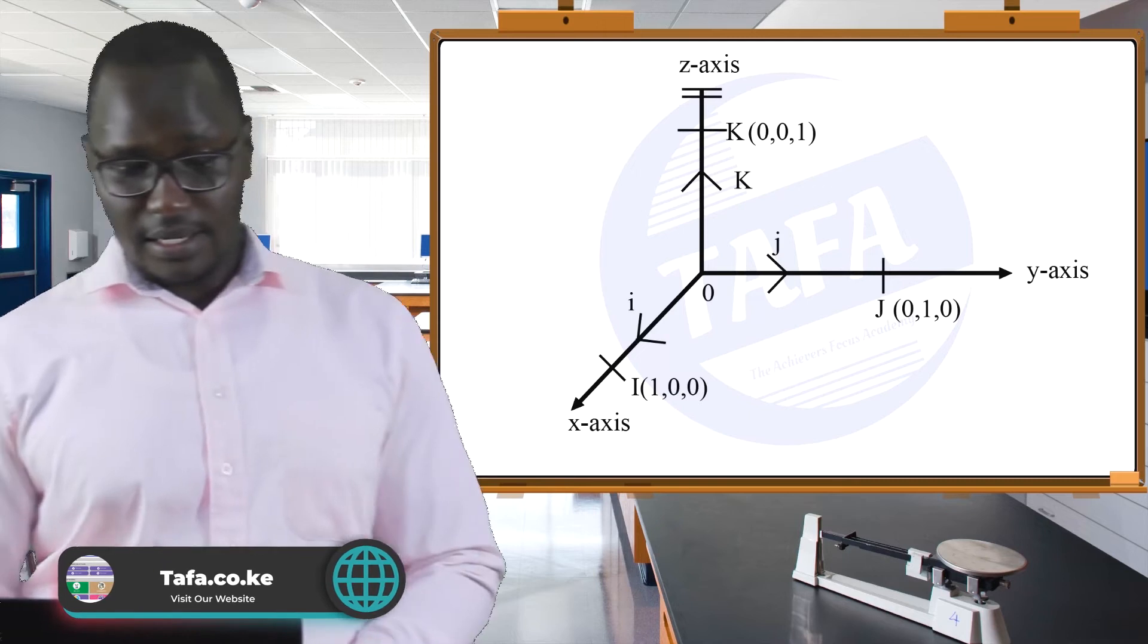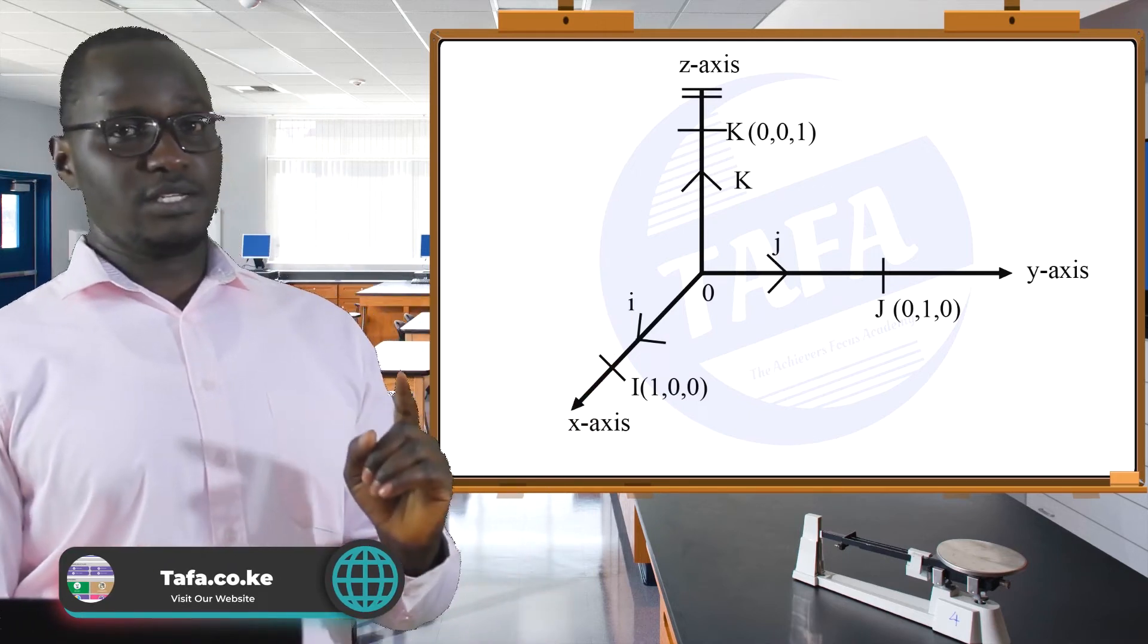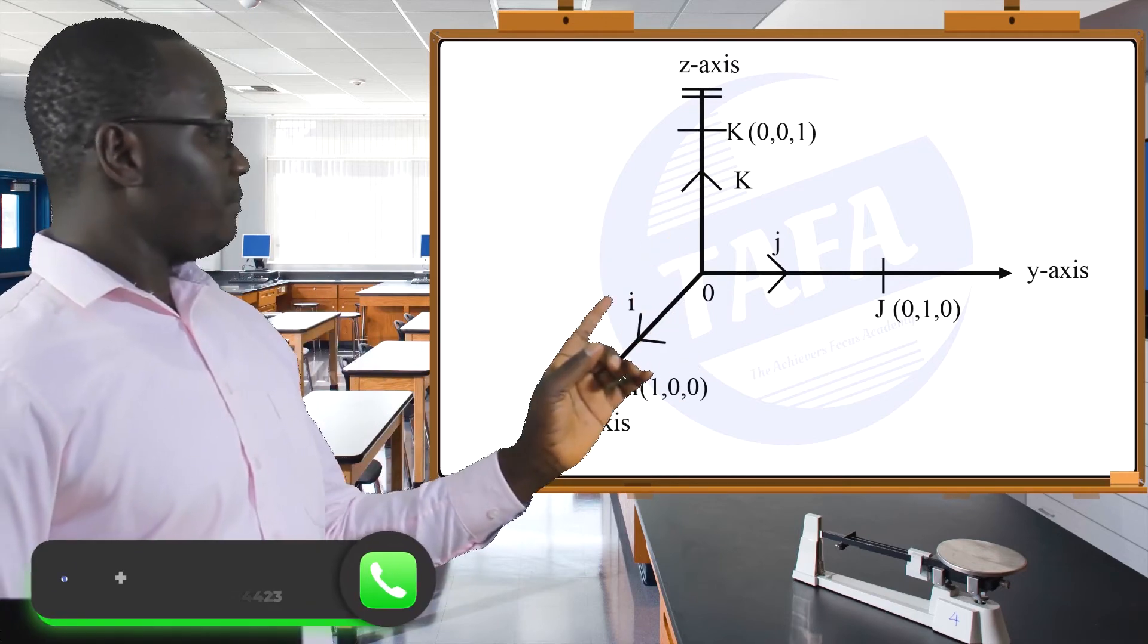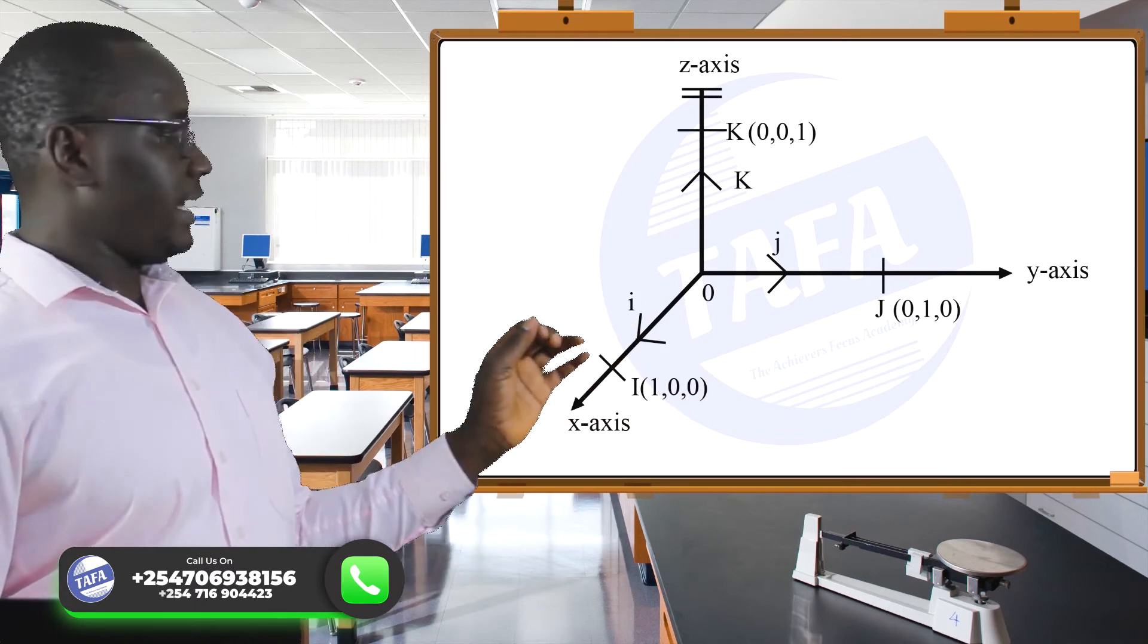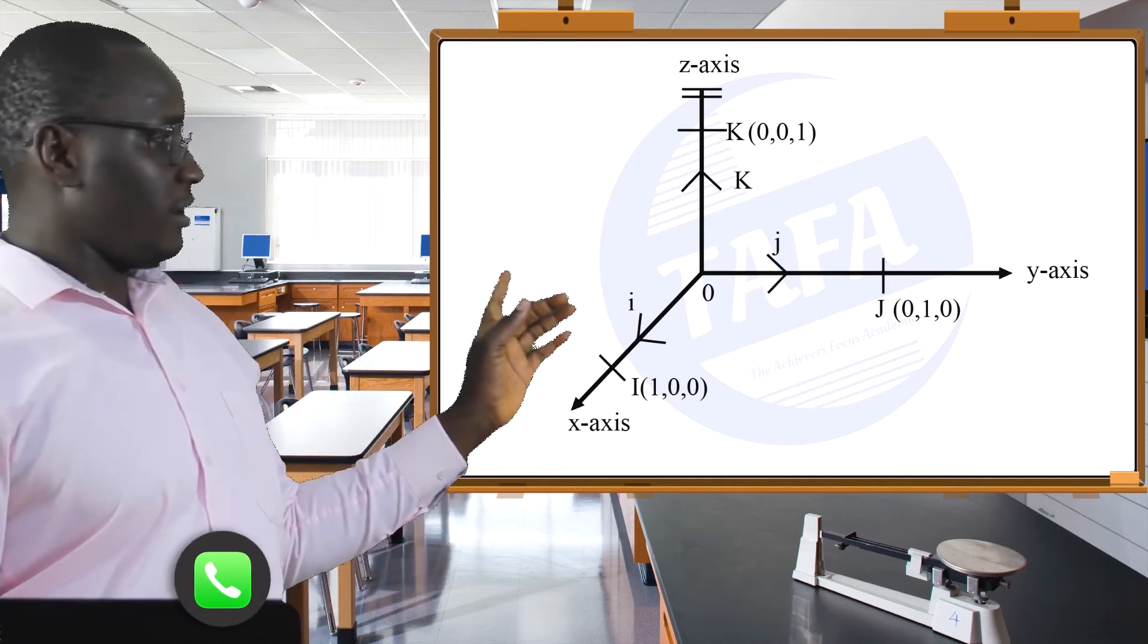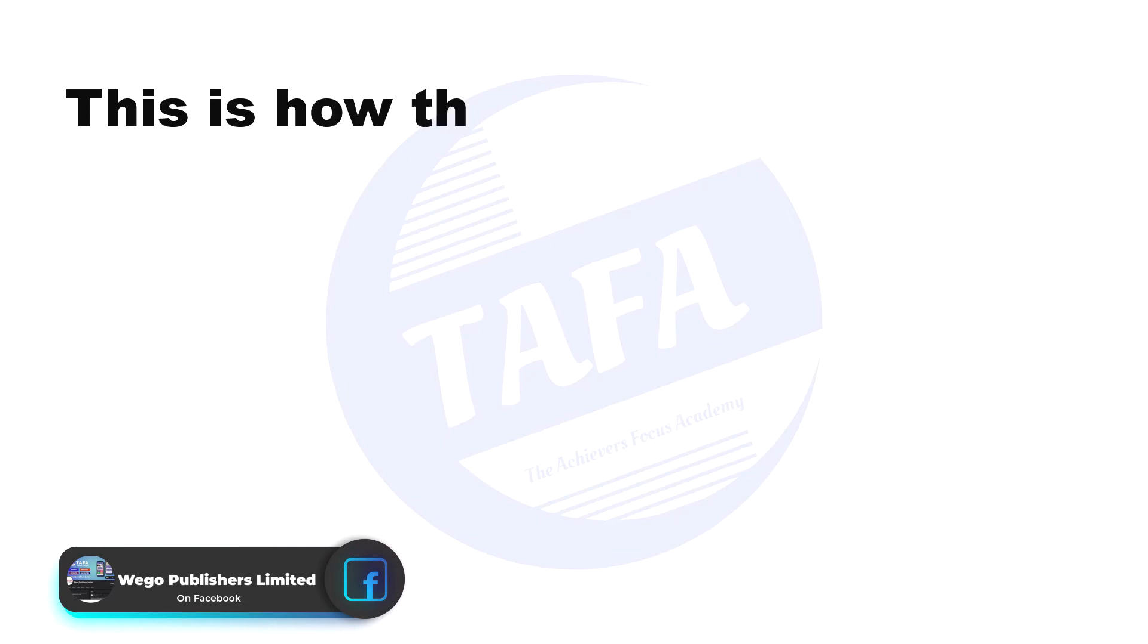You can see we have the x-axis and the y-axis. Now the point that we're talking about is (a, b). The ordered pair. On the x-axis we have a units from the origin (0, 0), and b units on the y-axis from the origin, as shown.